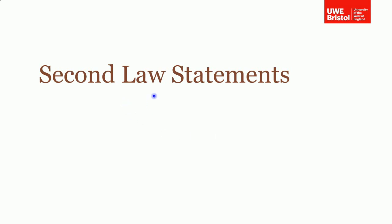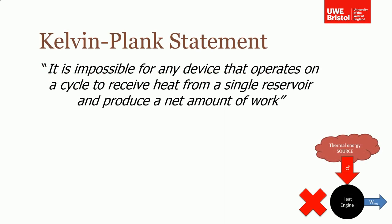At the start of this lecture I said that there were two statements that make up the second law of thermodynamics, and that's what I'm going to talk about in this section. The first is the Kelvin-Planck statement. The Kelvin-Planck statement states that it is impossible for any device that operates on a cycle to receive heat from a single reservoir and produce a net amount of work.